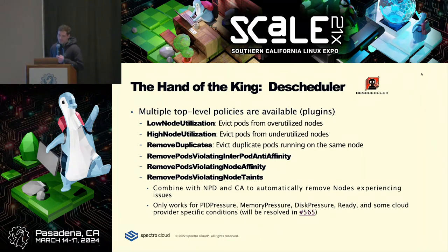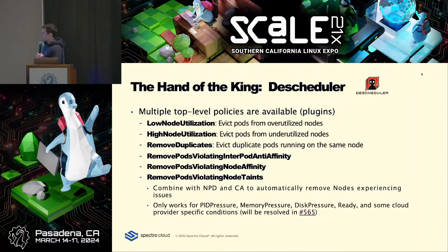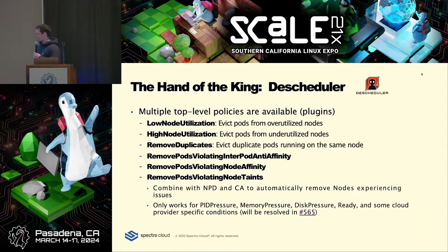There are six default policies that ship with Descheduler. Low node utilization means Descheduler detects how busy nodes are, and if it deems them overutilized, it evicts pods to reduce utilization — balancing workload across the entire cluster. High node utilization is the opposite: it detects low-utilized nodes and evicts workloads off them to bin pack.